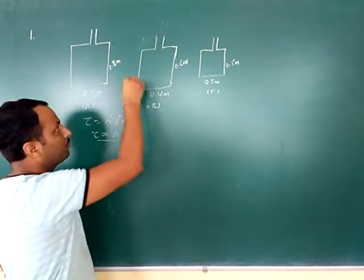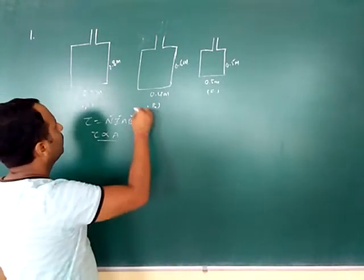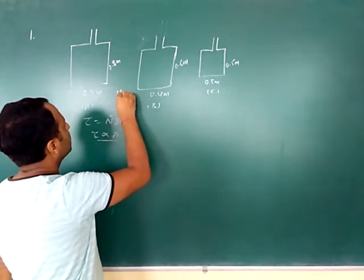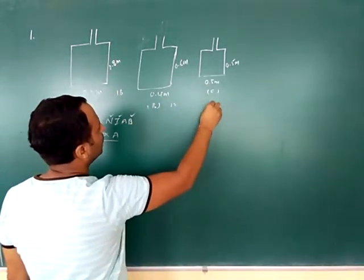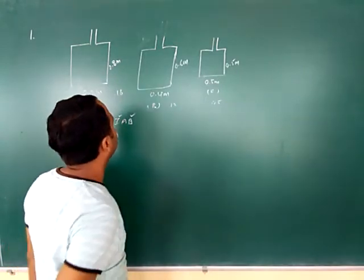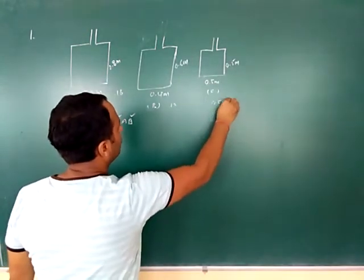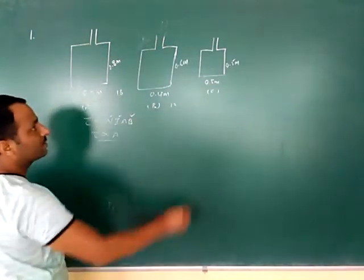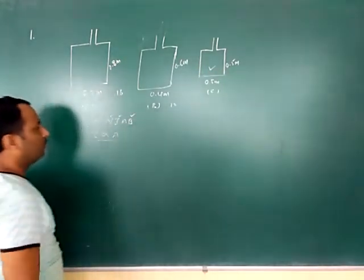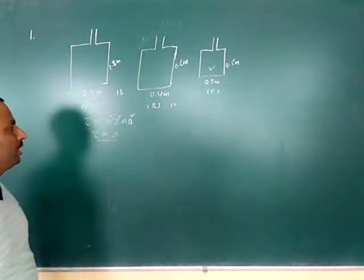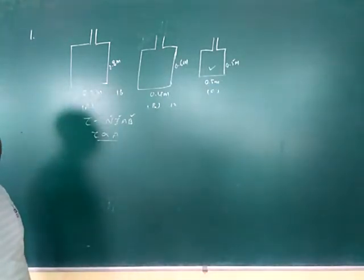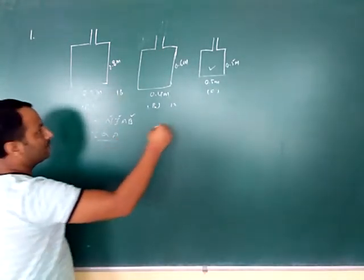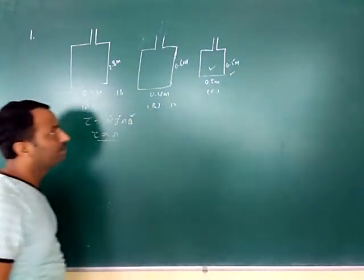0.16, 0.16, 0.12, 0.25 meter square. So the area which is higher, the torque will be greater. The area which is higher, the turning effect will produce more. The answer is third, okay?